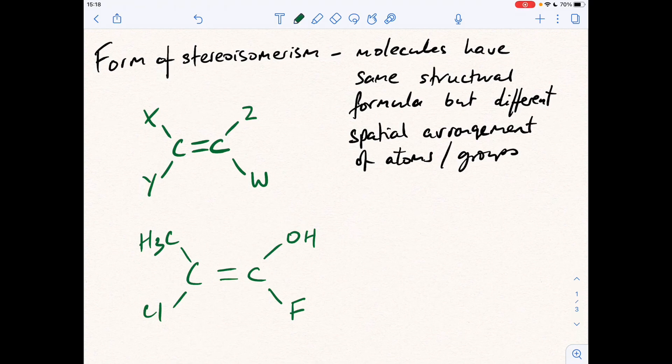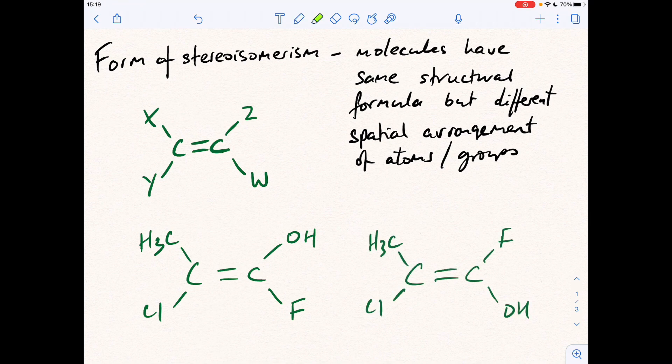So what does the other isomer look like? So what's the same structural formula but a different spatial arrangement of the atoms? Well, the way we do that is we just switch one side over. So because I've done that with the pointer, we'll put the OH down there and the F up there. So that generates that molecule there.